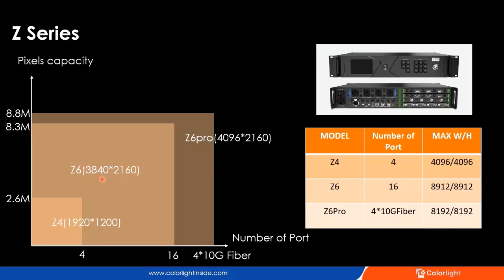The maximum resolution of Z6 is 3840x2160. Z6 Pro is an advanced processor. It has four optical fiber output ports instead of Ethernet ports — two for the main signal and two for backup. Each fiber connector uses 10 gigabytes, so the maximum loading capacity is 8.8 million pixels. For more details about Z-Series or X-Series, you can follow us on YouTube at Colorlight Technology and watch the previous videos.